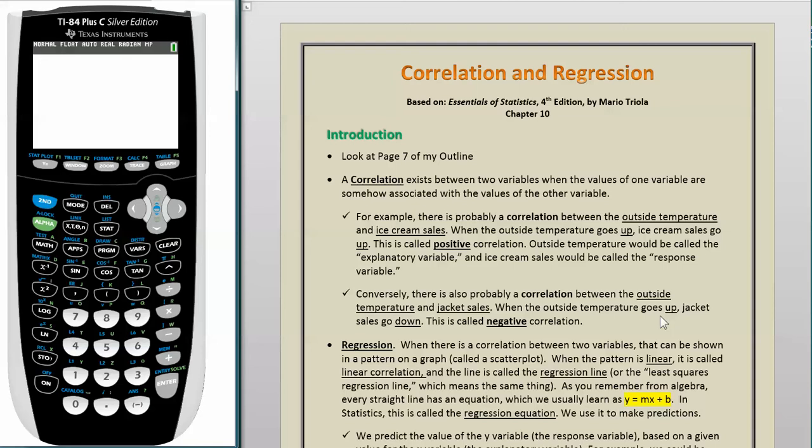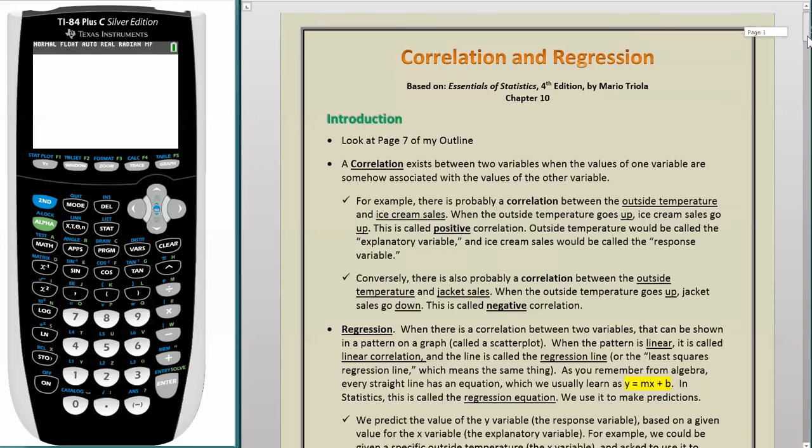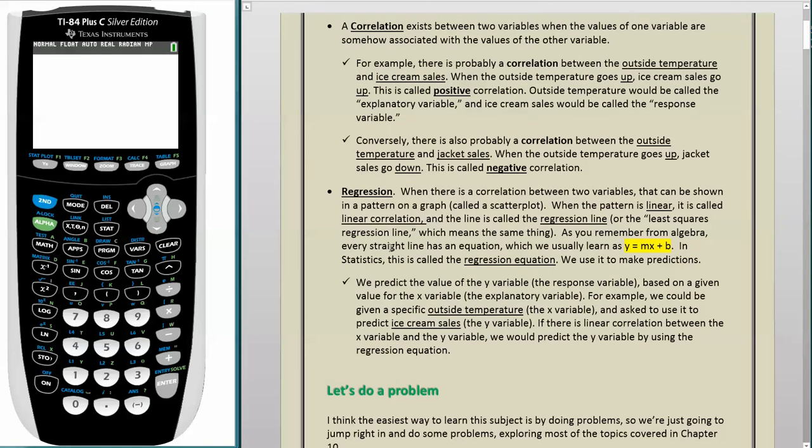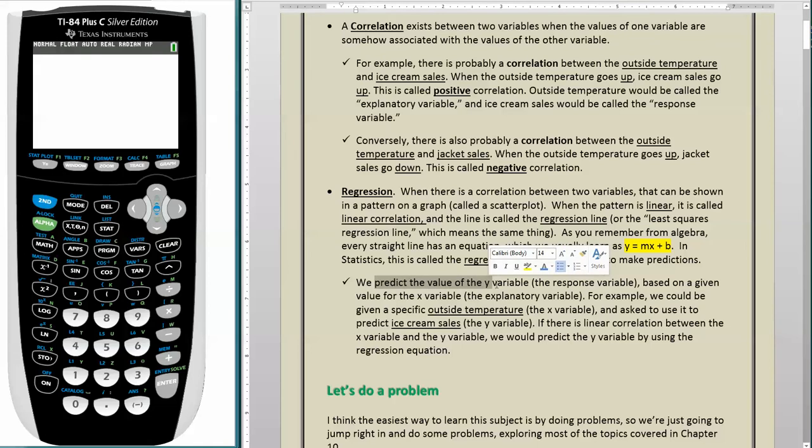As you remember from algebra, every straight line has an equation, which we usually learn as y equals mx plus b. In statistics, this is called the regression equation, and we use it to make predictions. We predict the value of the y variable based on a given value for the x variable, or the explanatory variable.